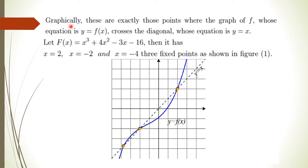Graphically, fixed points are exactly those points where the graph of the function f — whose equation is y = f(x) — crosses the diagonal whose equation is y = x. The points where y = f(x) cuts the line y = x are called the fixed points of f(x). For example, if f(x) = x³ + 4x² − 3x − 16, then from the graph we can see that x = 2, x = −2, and x = −4 are the fixed points of f(x) because they lie on the line y = x.